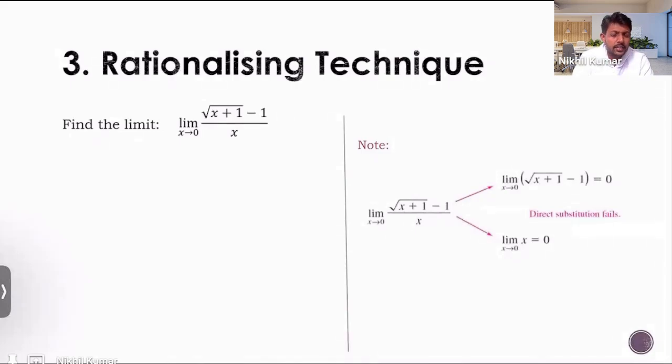It's the rationalizing technique. Sometimes we have functions which are difficult to factorize, so we can't use the factorization method there. If you try direct substitution here, see what happens.